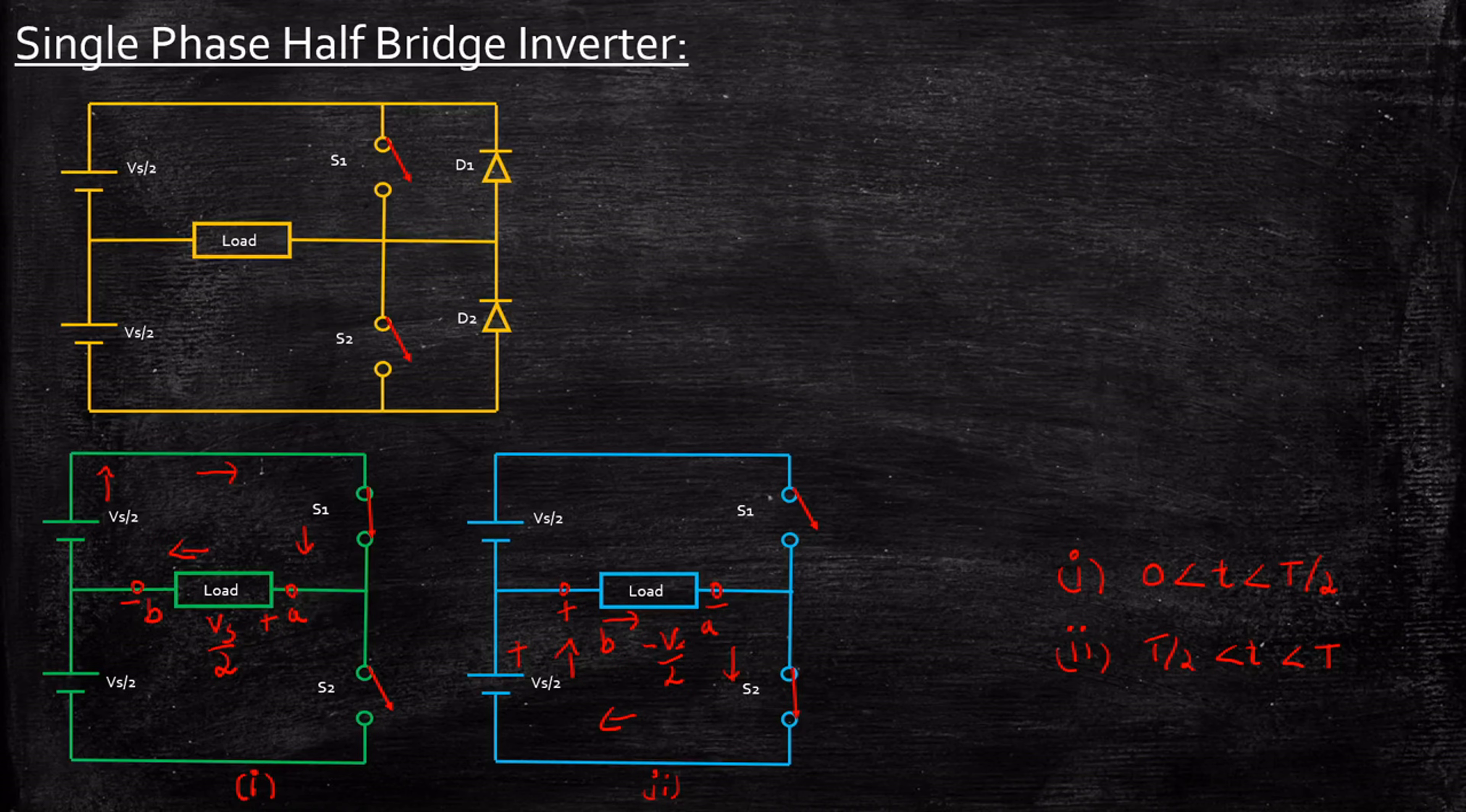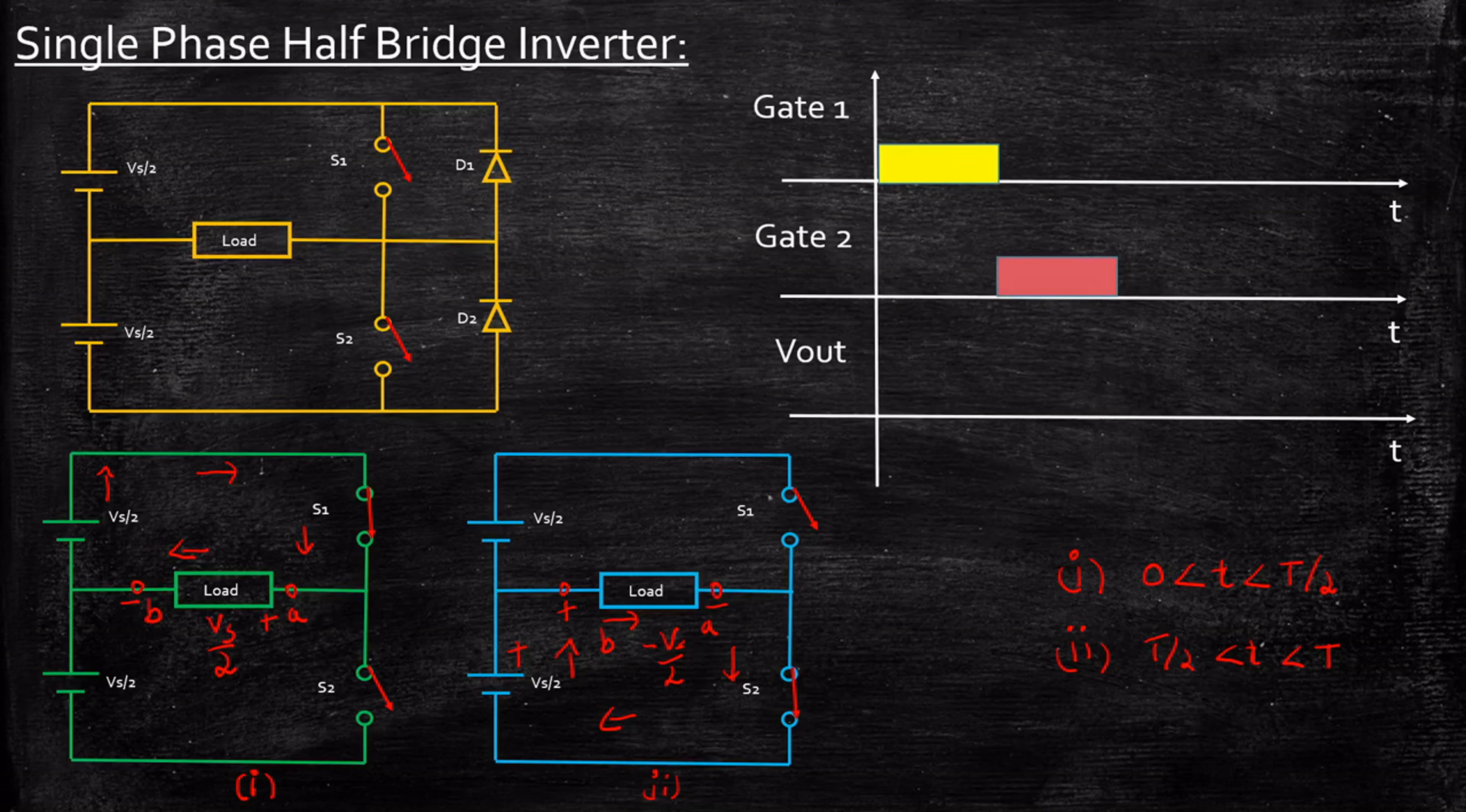So now, how are we saying that this is actually an inverter? Let us consider the gate pulses—we are going to trigger switch one and switch two at these instances. I'm going to extrapolate these two. So what will be the output voltage? Basically, you were getting output voltage equal to Vs/2 during zero to T/2. This is up to the point where T/2 is available, and this is the total time T. So from zero to T/2, for switch S1, you are giving the gate pulse. As a result, you're getting Vs/2 here.